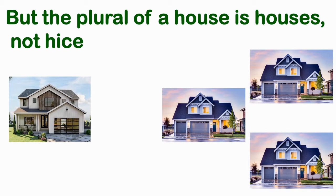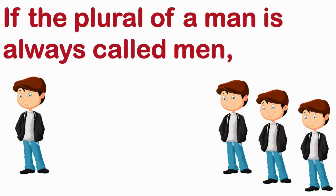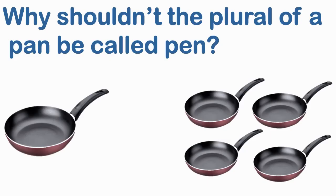If the plural of a man is always called men — a single person is called man, and the plural of man is men — why shouldn't the plural of a pan be called pen? If we follow the rule that man is singular and men is plural, then the plural of pan should be pen. But it is not so. The plural of a pan is pans.